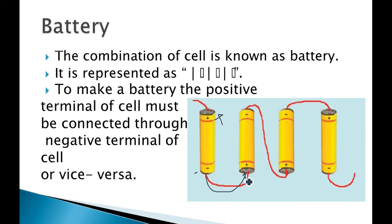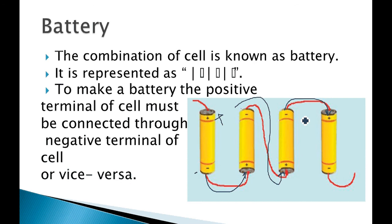Always remember: connect opposite signs — minus to a plus. This minus connects to another cell's plus. You can see that minus is connected to a plus, and plus is connected to a negative sign. So we are connecting cells together and they are forming a battery.